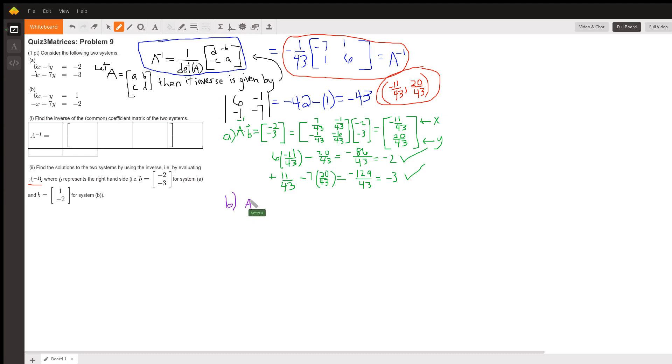We're going to take A inverse for part B. This time is 1, negative 2. This is going to be 7 over 43, negative 1 over 43, negative 1 over 43, negative 6 over 43. And I'm going to multiply that by my 1 on top and my negative 2 on the bottom.